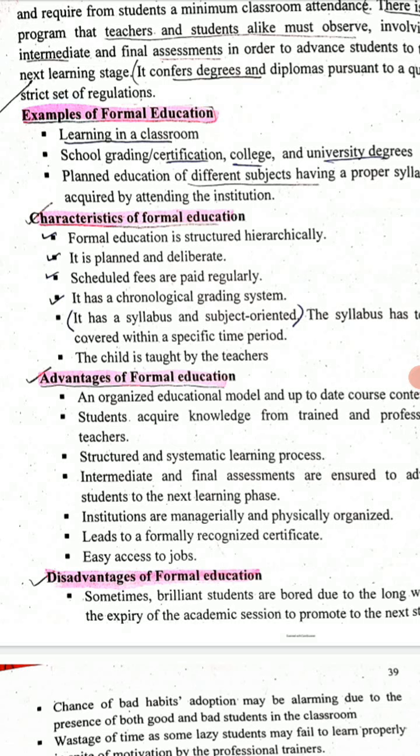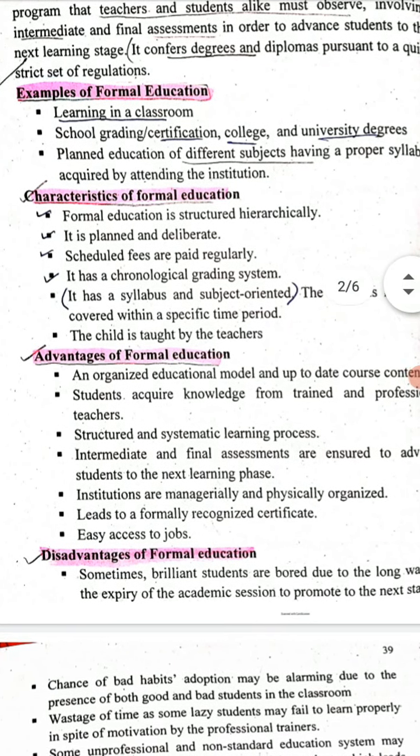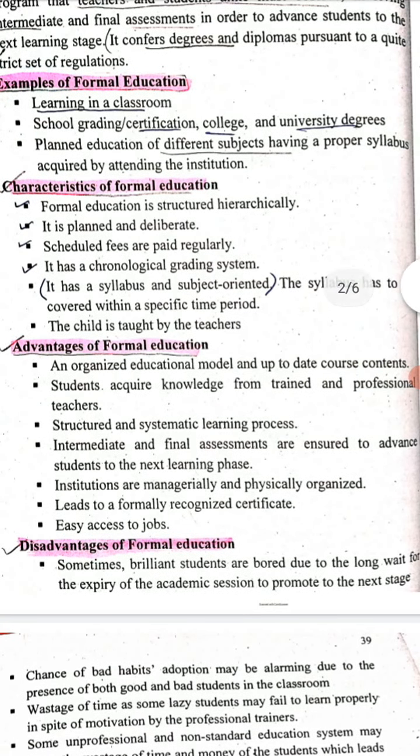Now we will discuss the advantages of formal education: an organized educational model, up-to-date course content, a structured and systematic learning process, leading to formally recognized certificates, easy access to jobs, and instruction that is managed and physically organized.